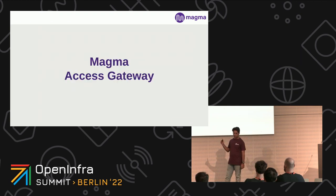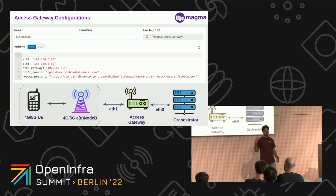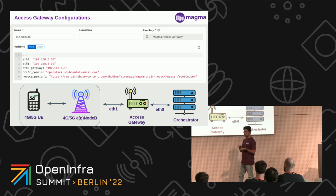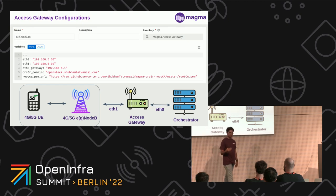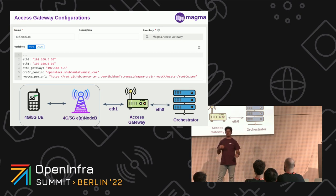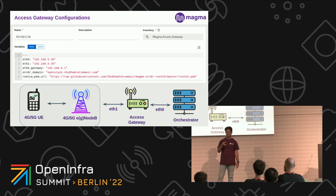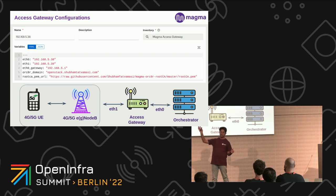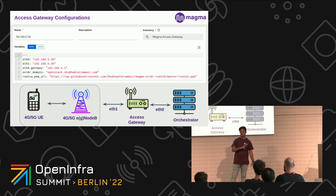The second component is Magma's Access Gateway. When setting up a lab, we need to provide a minimum of three VMs. One VM is for our Access Gateway, which sits in the middle with a two-way connection — we need two virtual Ethernet ports. One connects to the orchestrator, and the second connects to our eNodeB, gNodeB, or UERAN simulator. In the real world, when we deploy a radio in an area, the access gateway sits at the edge location with two different cables: one goes out to the internet, and one goes out to the actual radio. Through that radio, a user equipment or mobile device connects.